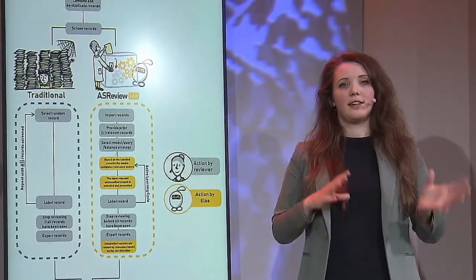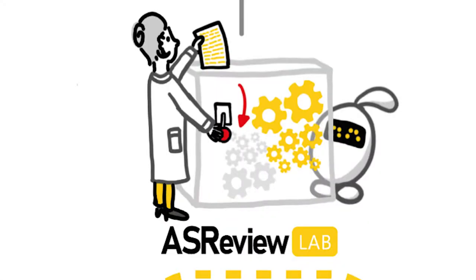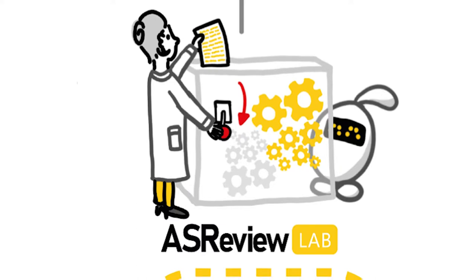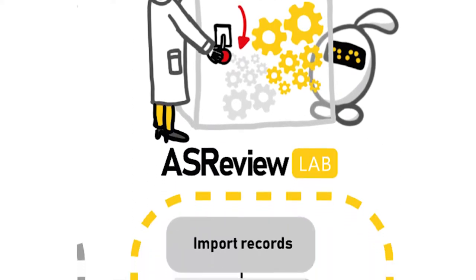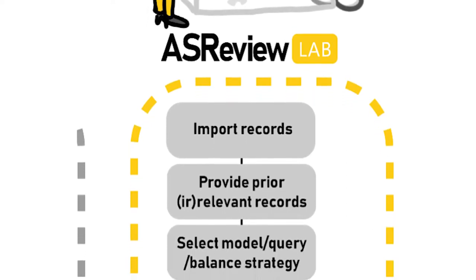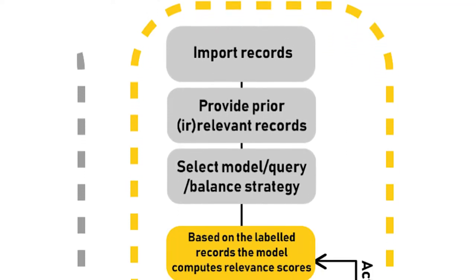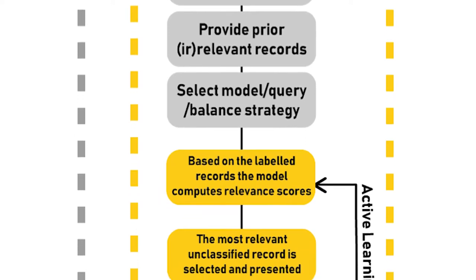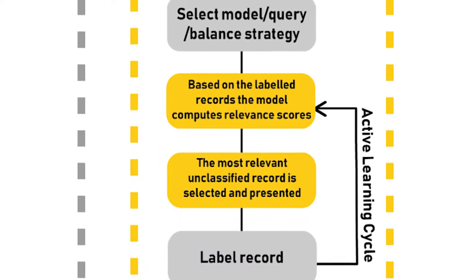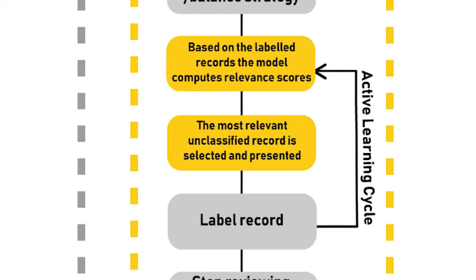With ASReview, the beginning is a bit different, but it means you save a lot of time eventually. You start by importing the records — the dataset — into ASReview. Then you have to give ELAS a little information about what you're looking for and what you're not, so you provide at least one relevant and one irrelevant paper as priors. You also decide on the settings, but there are defaults, and Sophie will show you more about the priors and settings in her demonstration.